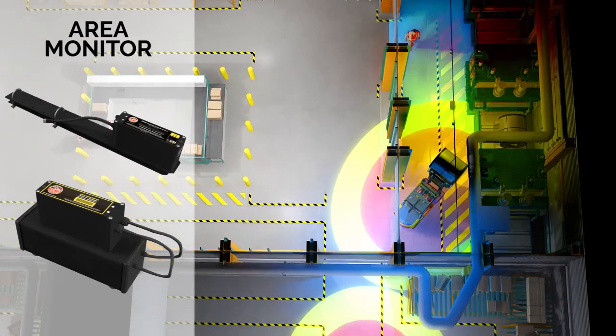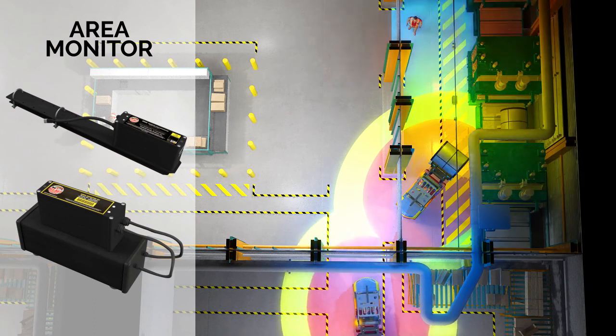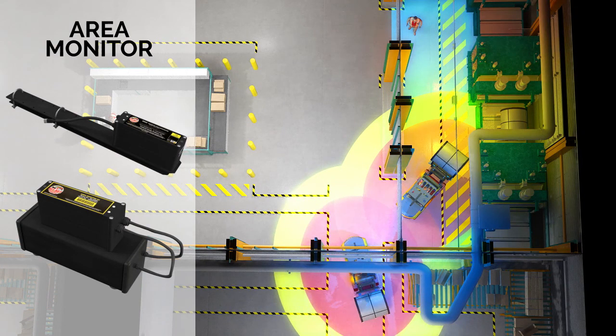The Area Monitor alerts the presence of mobile equipment by turning on lights or other signals. In this example, as the mobile equipment is exiting the pathway, a blue light provides the alert to other personnel and mobile equipment.